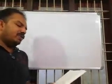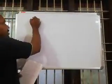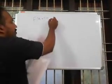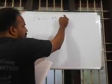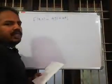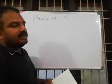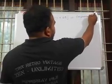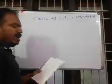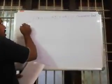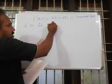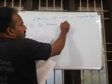Now examining another question: determine whether f(x,y) = 4yi + 4xj is a conservative field, and if so, find the potential function.